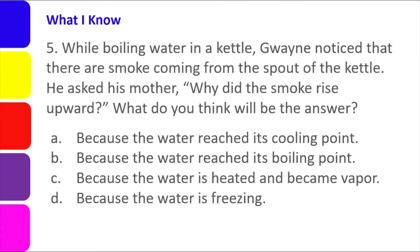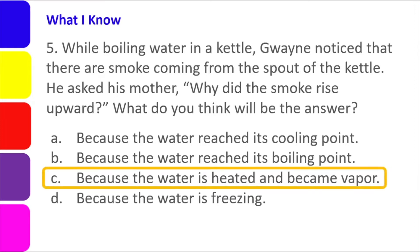Number 5: While boiling water in a kettle, Gwain noticed smoke coming from the spout. He asked his mother why the smoke rises upward. The options are: A. Because the water reached its cooling point. B. Because the water reached its boiling point. C. Because the water is heated and became vapor. D. Because the water is freezing. The correct answer is letter C — because the water is heated and later becomes vapor, seen rising as steam.